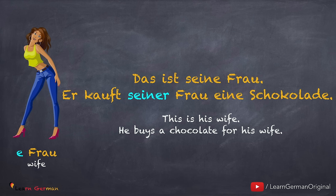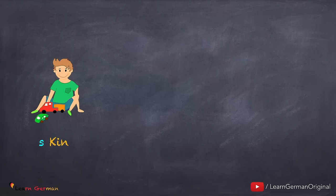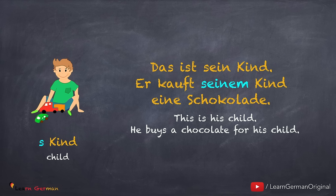Das ist seine Frau. Er kauft seiner Frau eine Schokolade. Since the article for 'Frau' is 'die', we use 'seiner' for the dative object. Das ist sein Kind. Er kauft seinem Kind eine Schokolade. Here also we use 'seinem' because the article for 'Kind' is 'das', and in dative it changes to 'seinem'.